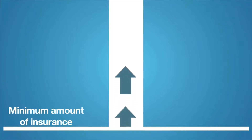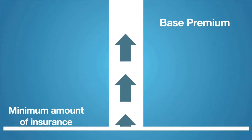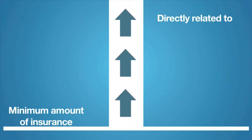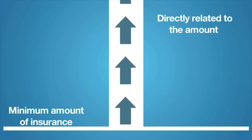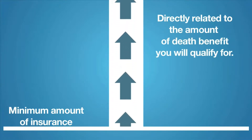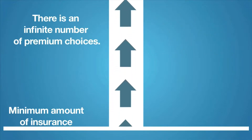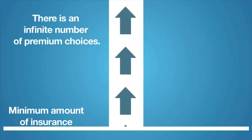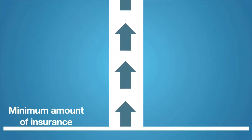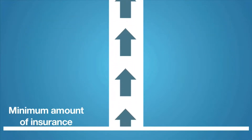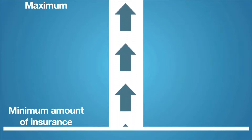Let's take a look at the pricing or premium structure of insurance contracts. With any contract, first we must determine the minimum amount of insurance, known as the base premium. This premium is directly related to the amount of death benefit you will qualify for. There is an infinite number of premium choices — for any amount of death benefit, there is a minimum you can pay and a maximum you can pay.